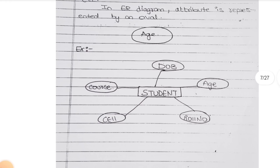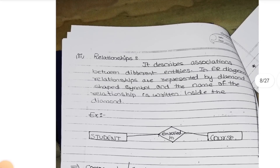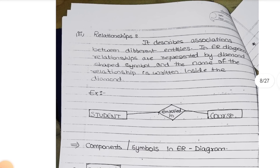Student attributes include: date of birth, age, phone number. Relationship - Student, Course: that is the relationship between entities. What type of diagrams are used? First, you are having components or symbols in ER diagrams.